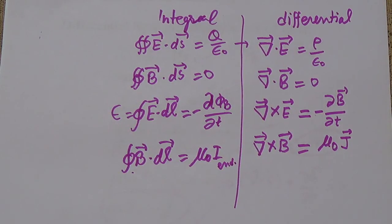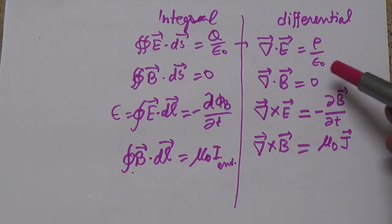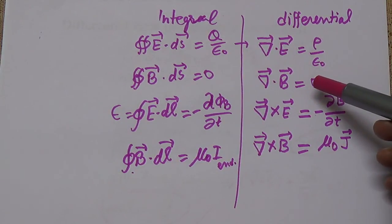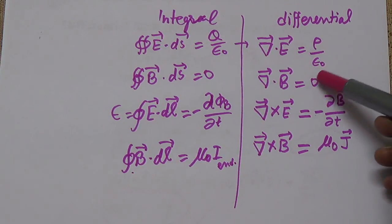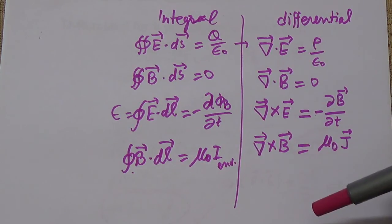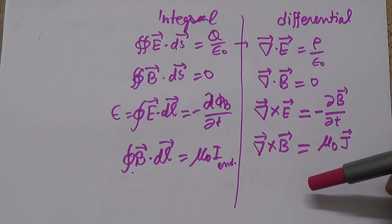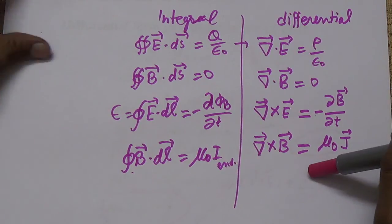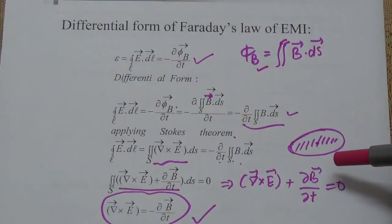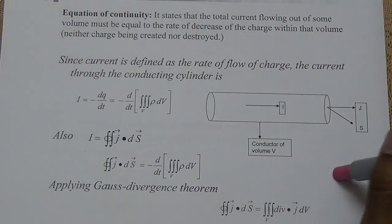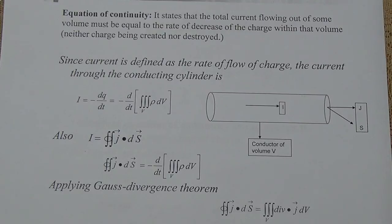These equations are the result of the connection between electric fields and magnetic fields, and are known as Maxwell's four equations in electrodynamics. After this, we will study about the continuity equation.